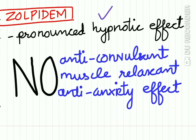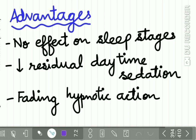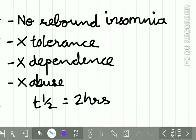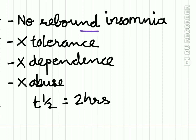Zolpidem has a pronounced hypnotic effect but has no anticonvulsant, no muscle relaxant, and no anti-anxiety effect. Advantages of Zolpidem include no effect on sleep stages, reduced residual daytime sedation, and fading hypnotic action. There is no rebound insomnia, no tolerance, no dependence, no abuse, and the half-life of the drug is 2 hours.